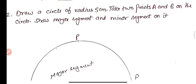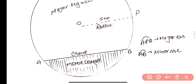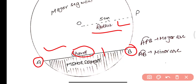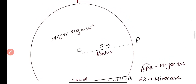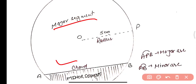Question two: draw a circle of radius 5 centimeters, take two points A and B on it, and show the major segment and minor segment. A segment is formed by a chord and its corresponding arc. The major segment is formed by the major arc and the chord; the minor segment is formed by the minor arc and the chord. Here OP is the radius of 5 centimeters, AB is the chord. Minor arc AB and chord AB form the minor segment; major arc APB and chord AB form the major segment.